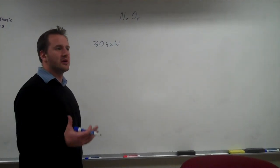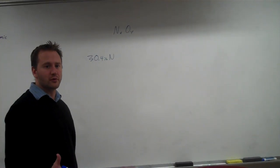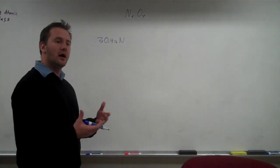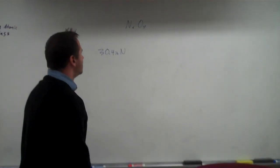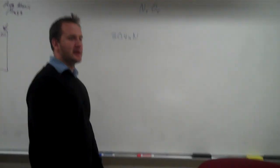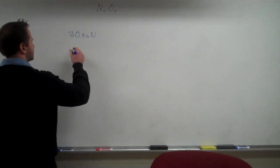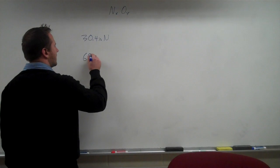Now, whenever we want to find a ratio of elements, we need to convert to moles. That allows us to compare amounts of two different substances. So if it's 30.4% nitrogen, we then know that it's 69.6% oxygen.